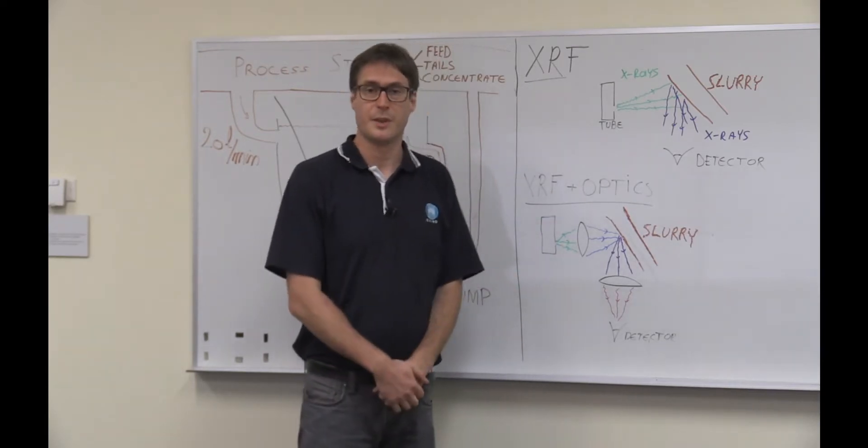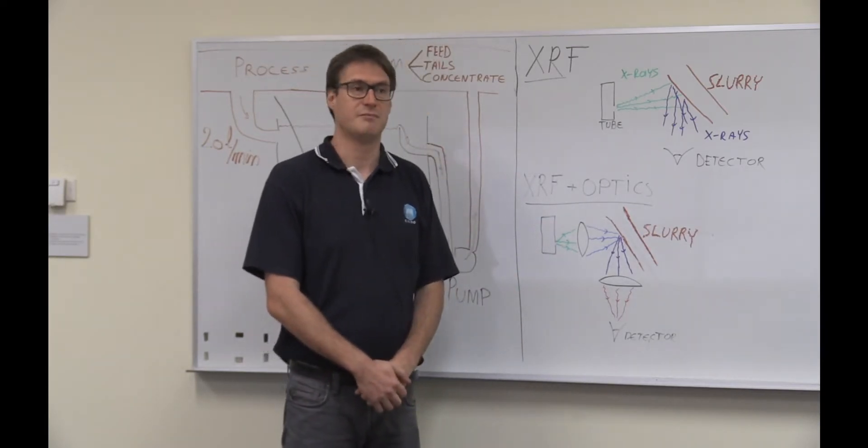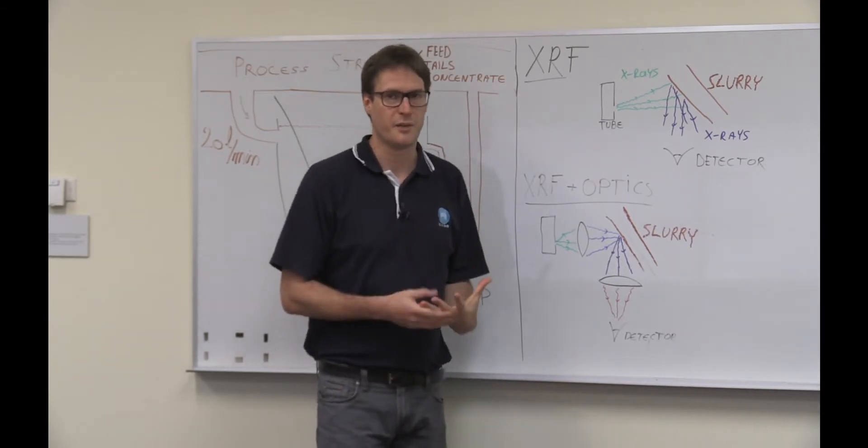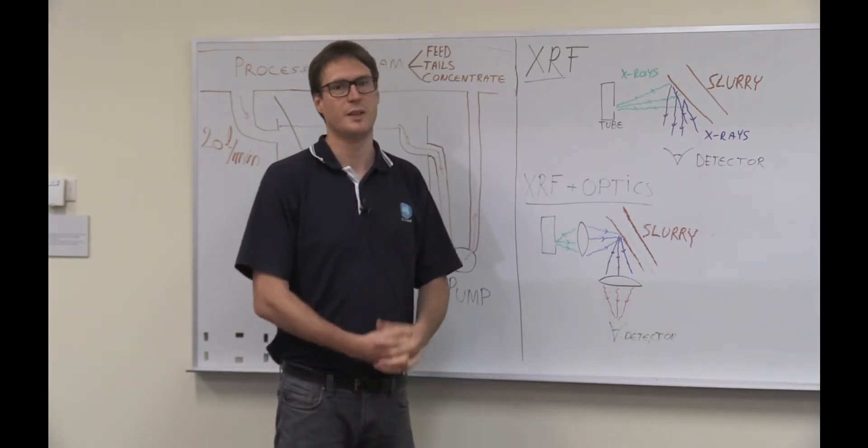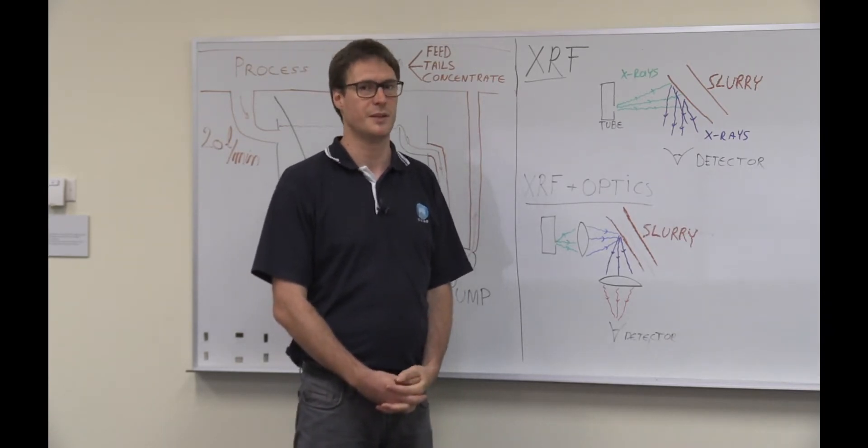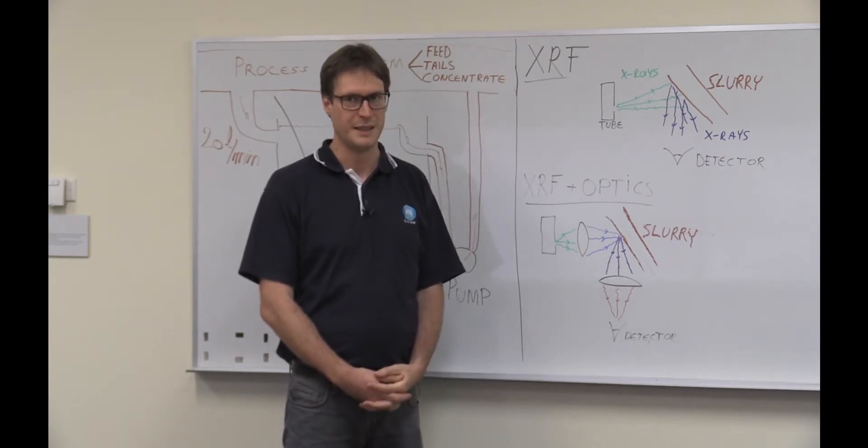In such a traditional setup, you can detect gold at 10 parts per million levels. This is not enough to do real-time analysis of gold in slurries, because, for example, on tailings, you definitely need to be able to detect gold at parts per billion level.